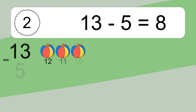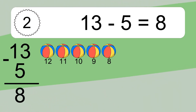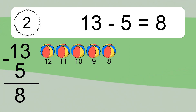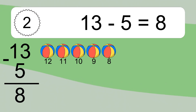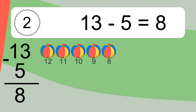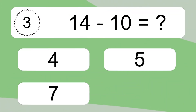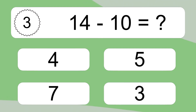13 minus 5 equals what? 13 minus 5 equals 8. Let's count it: 12, 11, 10, 9, 8.